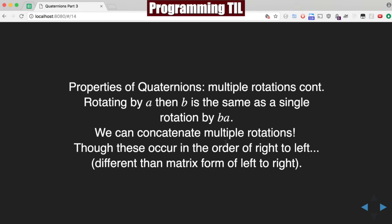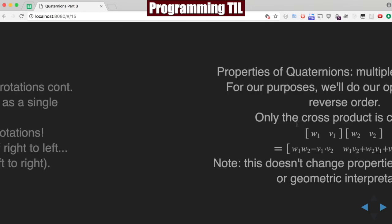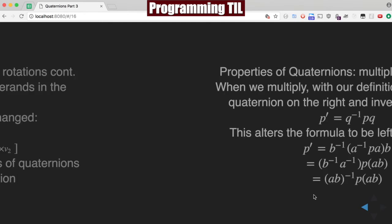Except the fact that the order is right to left, and not left to right. So, B, A as opposed to A, B. So, what are we going to do about that? Well, we're going to change our stuff to do it in the reverse order. And if you recall the cross product that I mentioned earlier in the episode, the only thing that's going to change by reversing the order is changing that cross product at the end here. And it doesn't really change any of the properties of quaternions or geometric interpretation of them.